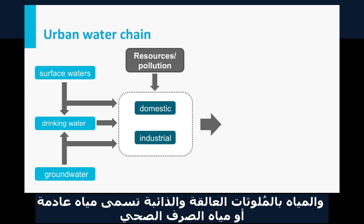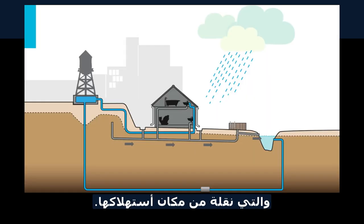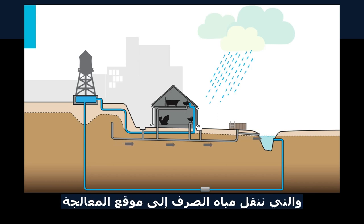The water with its suspended and dissolved pollutants is now called wastewater or sewage and is carried away from the site of use. Collection of the used urban waters is generally done by means of an extensive sewage network, which conveys the urban sewage to the site of treatment.